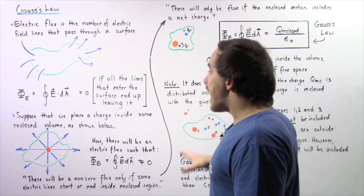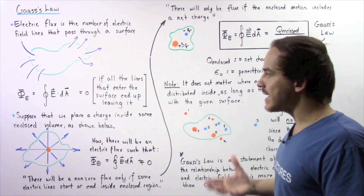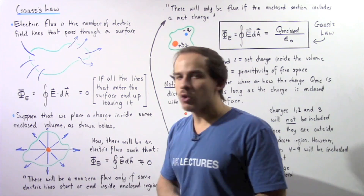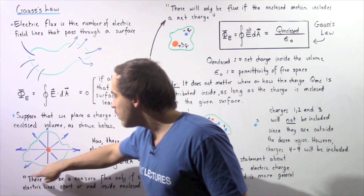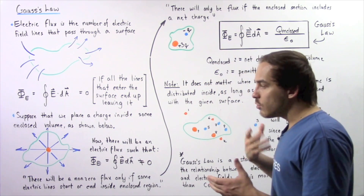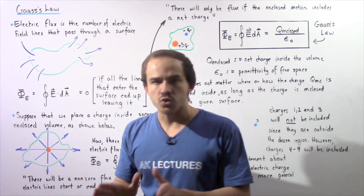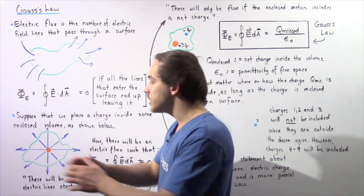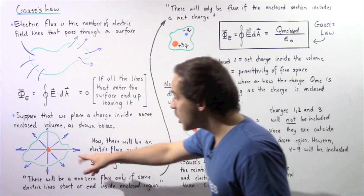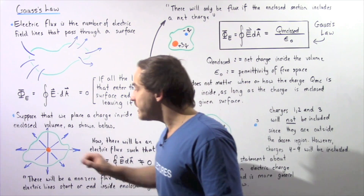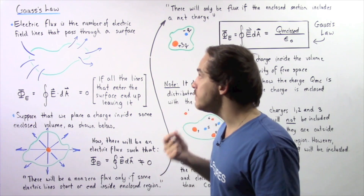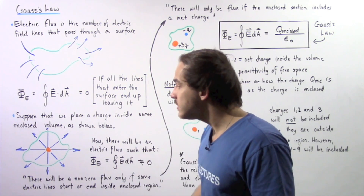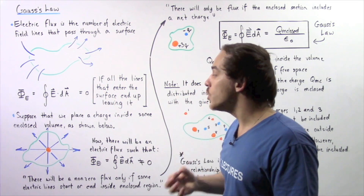Now let's suppose we take an electric charge and place it inside an enclosed volume. We have a positive charge inside the region, so electric field lines begin at the charge and extend outward in all possible directions, shown by the blue lines. Now we only have lines coming out of the region, meaning our flux will be positive. If this were a negative charge, all field lines would be going into the region and our flux would be negative.